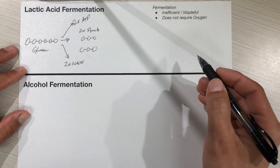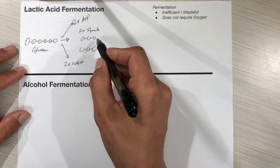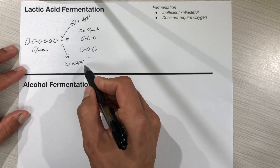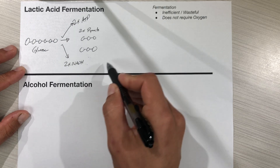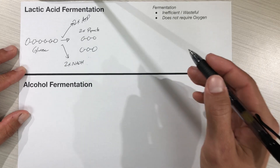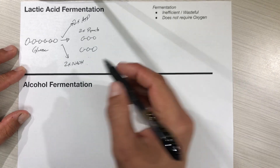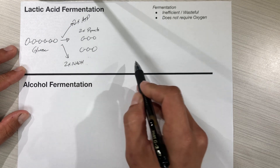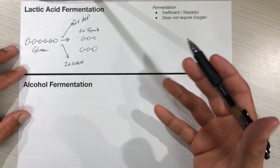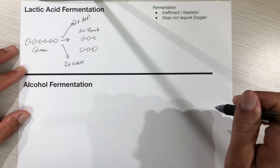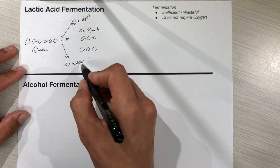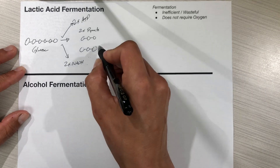The next steps are to basically stabilize pyruvate, turn it into a more stable molecule, and also to bury these electrons back within the sugar molecule so they can't go out and hurt us inside the cell. What could happen is this NADH could find the protein complex within the electron transport chain and load electrons onto it, but there wouldn't be oxygen there to accept the electron at the end, and it would end up as a free radical — which is harmful. So we want to take the electrons off this NADH and put them right back into the pyruvate.